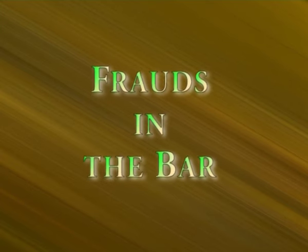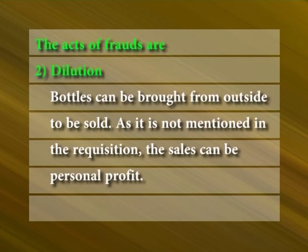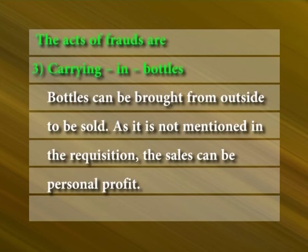Frauds in the bar: Acts of fraud cause the establishment to lose the value of items misappropriated and also the profit that would have been made. The acts of fraud include: short measure — pouring less than the quantity in the recipes and also less than the pegged measure; dilution — by watering the drinks, more measures from the bottle are available to sell for personal gain; and carrying in bottles — bottles brought from outside to be sold, which are not mentioned in the requisition, making the sales personal profit.